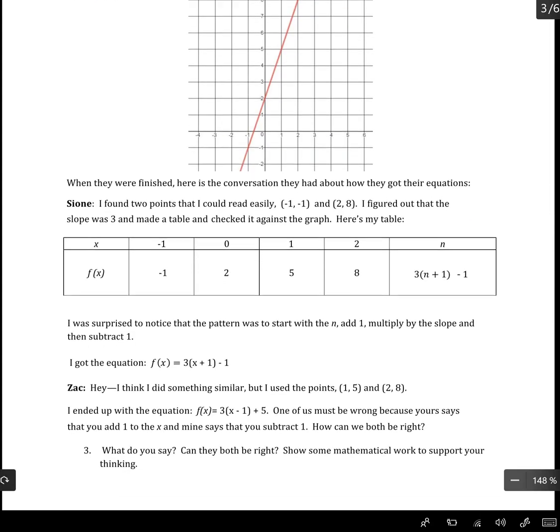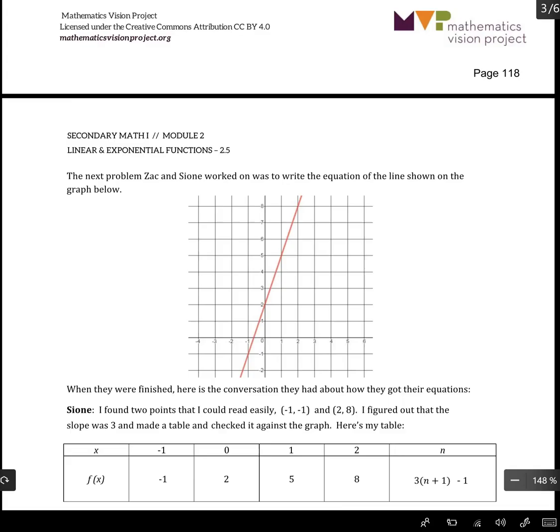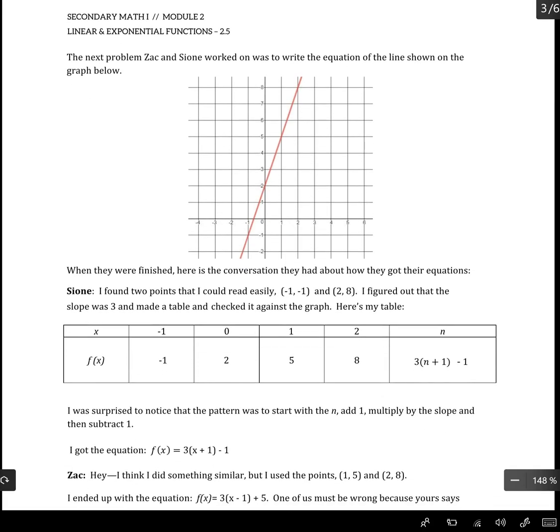It can also work if I have a linear function. So what we notice in these problems is that they both have the same graph and they base it off of different points and they write different equations. So either way, the slope of this graph is 3 because we're going up 3 and over 1. So you'll notice that they both have a 3 in their equation.